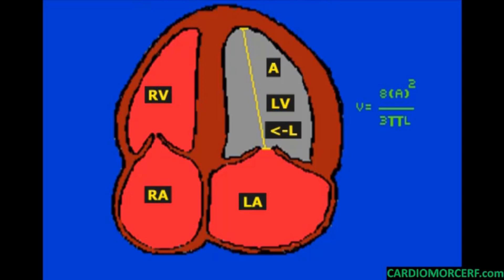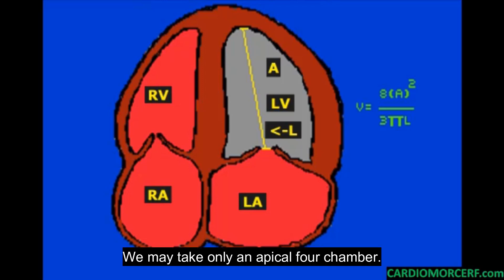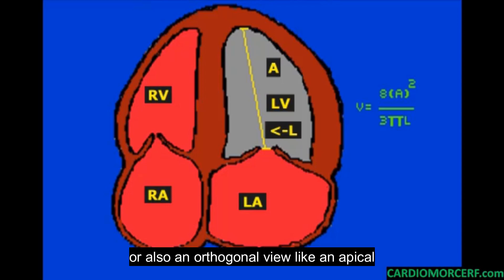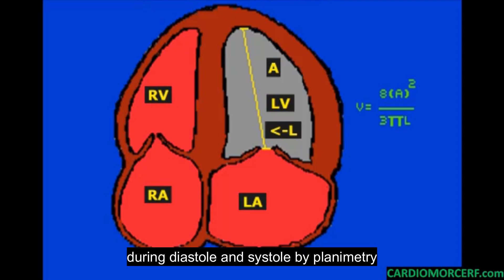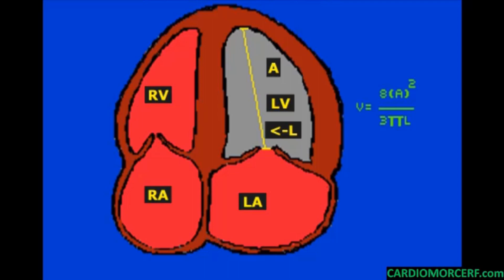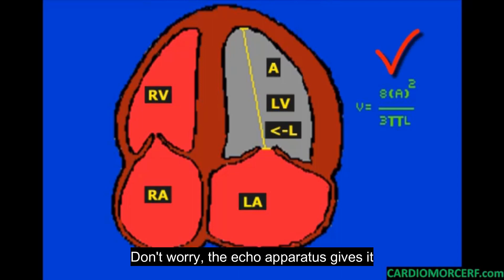How do we do it? We may take only an apical 4-chamber or also an orthogonal view like an apical 2-chamber. We measure the left ventricle volume during diastole and systole by planimetry of the left ventricular endocardial borders and the length of the mitral annulus to the apex, and then use this equation. The echo apparatus gives it automatically.